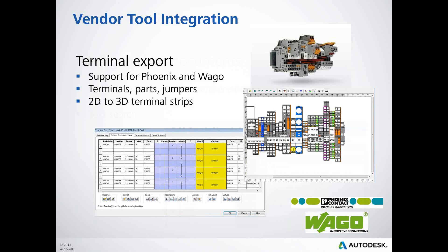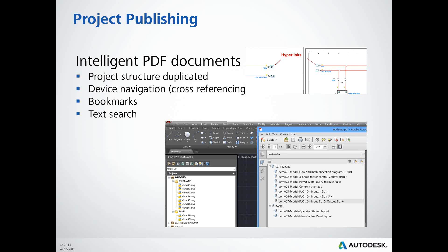Next up is our project publishing — an often-requested tool. Many companies send drawings to vendors as PDF files. We've now enabled intelligence into those PDF files, including linking, cross-referencing between components, bookmarks, and text searches. Clicking on a parent tag will take you to the panel component; clicking on a cross-reference will take you to the contact or between source and destination arrows. Your customers are going to love you for it.